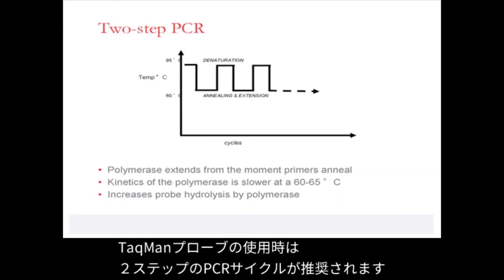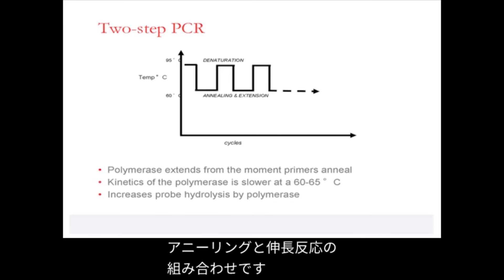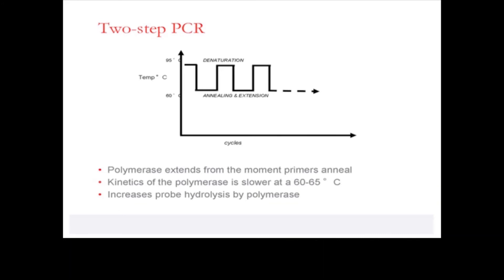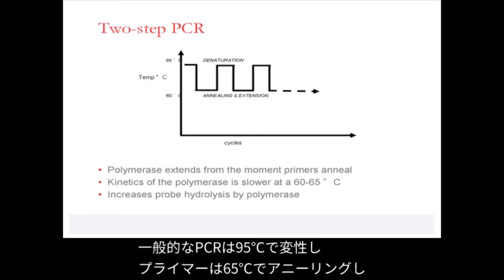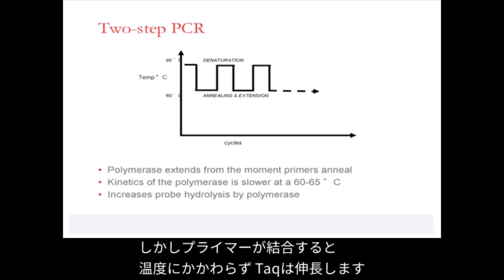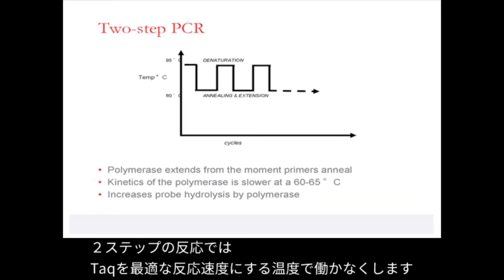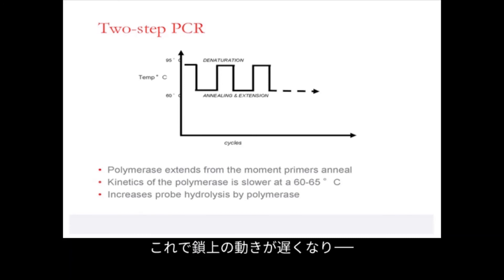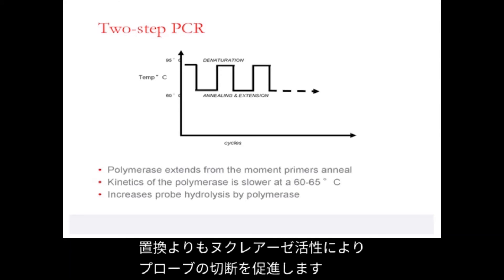When using TaqMan probes for qPCR, it is often recommended to use a two-step PCR cycle, which involves a combined annealing-extension phase. In normal PCR, denaturation is at 95 degrees, primer annealing at 65 degrees, and Taq extension at 72 degrees. However, Taq will extend the moment the primer binds, regardless of temperature. By carrying out a two-step reaction and not allowing Taq to function at its optimal kinetics temperature, it moves along the strand more slowly. This encourages cleavage of the probe by its nuclease activity rather than displacing it.